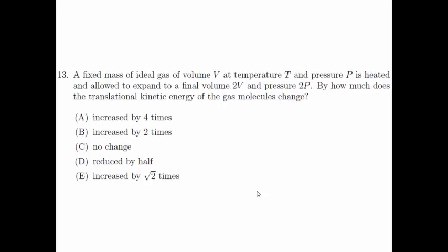To answer this question, we begin with the ideal gas equation PV = nRT. We can rearrange this to get PV/T = nR. Since R is a constant and n is the number of moles, which does not change in the system, the expression PV/T is constant.